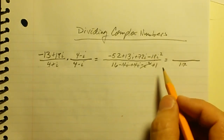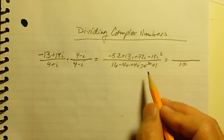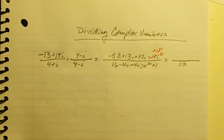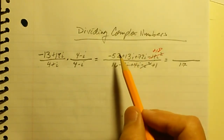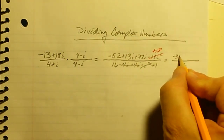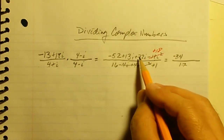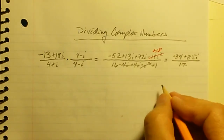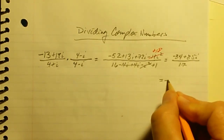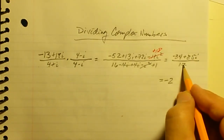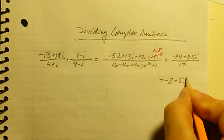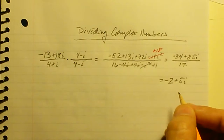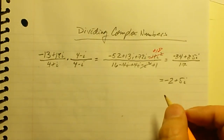Now simplifying the numerator: minus 18i squared is just plus 18, so I have negative 52 plus 18, which is negative 34, and 13i plus 72i, which is 85i. So the numerator is negative 34 plus 85i. Dividing: negative 34 over 17 is negative 2, and 85i over 17 is 5i.